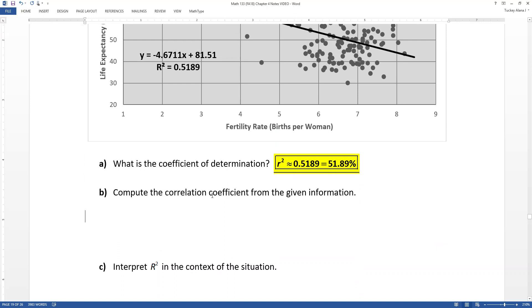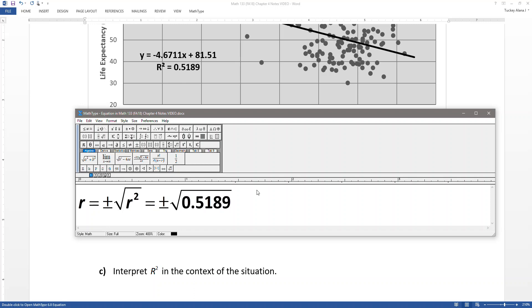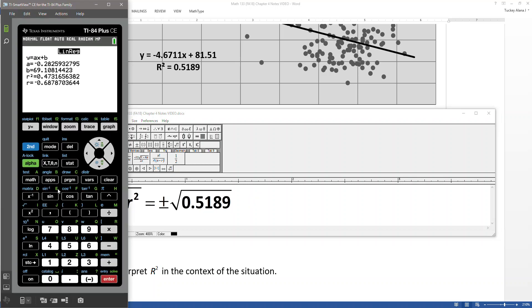All right, now we want to compute the correlation coefficient from that given information. Well, that gets interesting. So the thing is that R is the square root of R-squared. However, that doesn't guarantee the sign of R. In algebra, we learn that when you take the square root of both sides, you have to put in a plus or minus. So R could be positive or R could be negative, and the R-squared would still end up being positive. So that means I need to take the plus or minus square root of my 0.5189. I have to choose whichever one is appropriate for my data set.